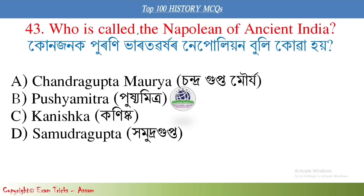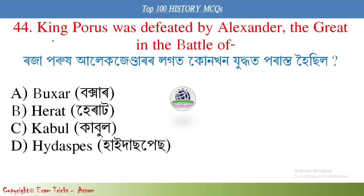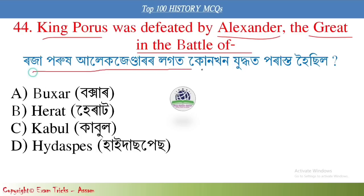Next question: Who was called the Napoleon of ancient India? Next question: King Porus was defeated by Alexander the Great in the Battle of Hydaspes.